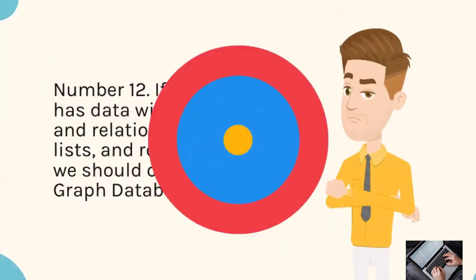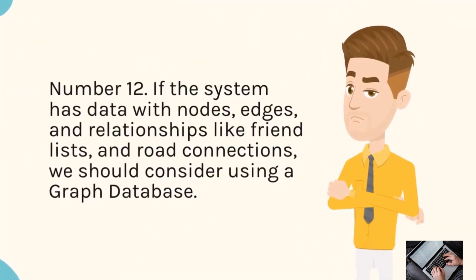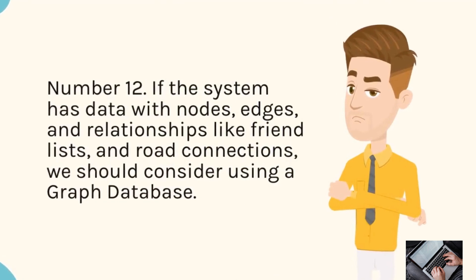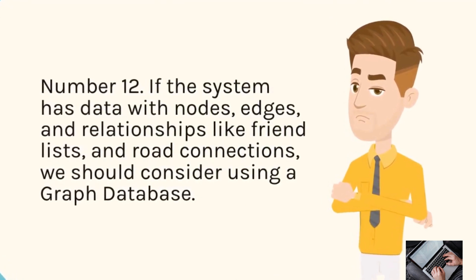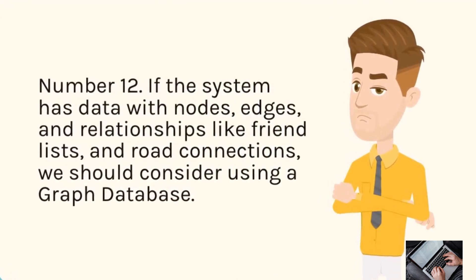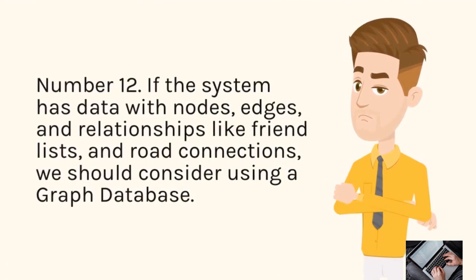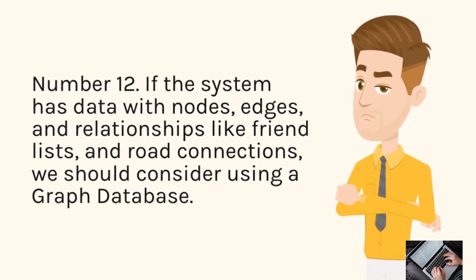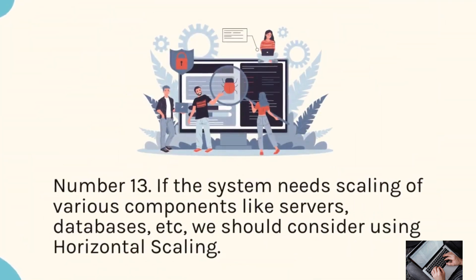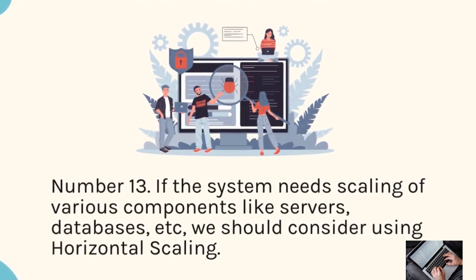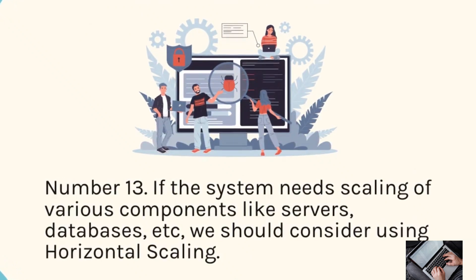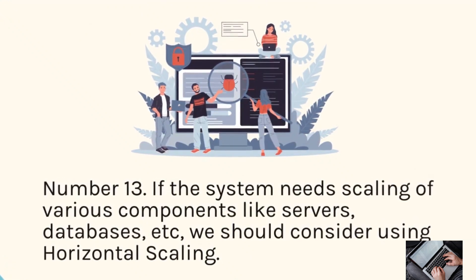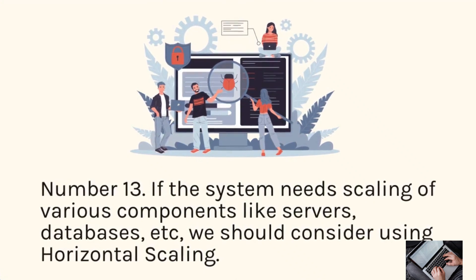Number 12: If the system has data with nodes, edges, and relationships like friend lists and road connections, we should consider using a graph database. Number 13: If the system needs scaling of various components like servers, databases, etc., we should consider using horizontal scaling.